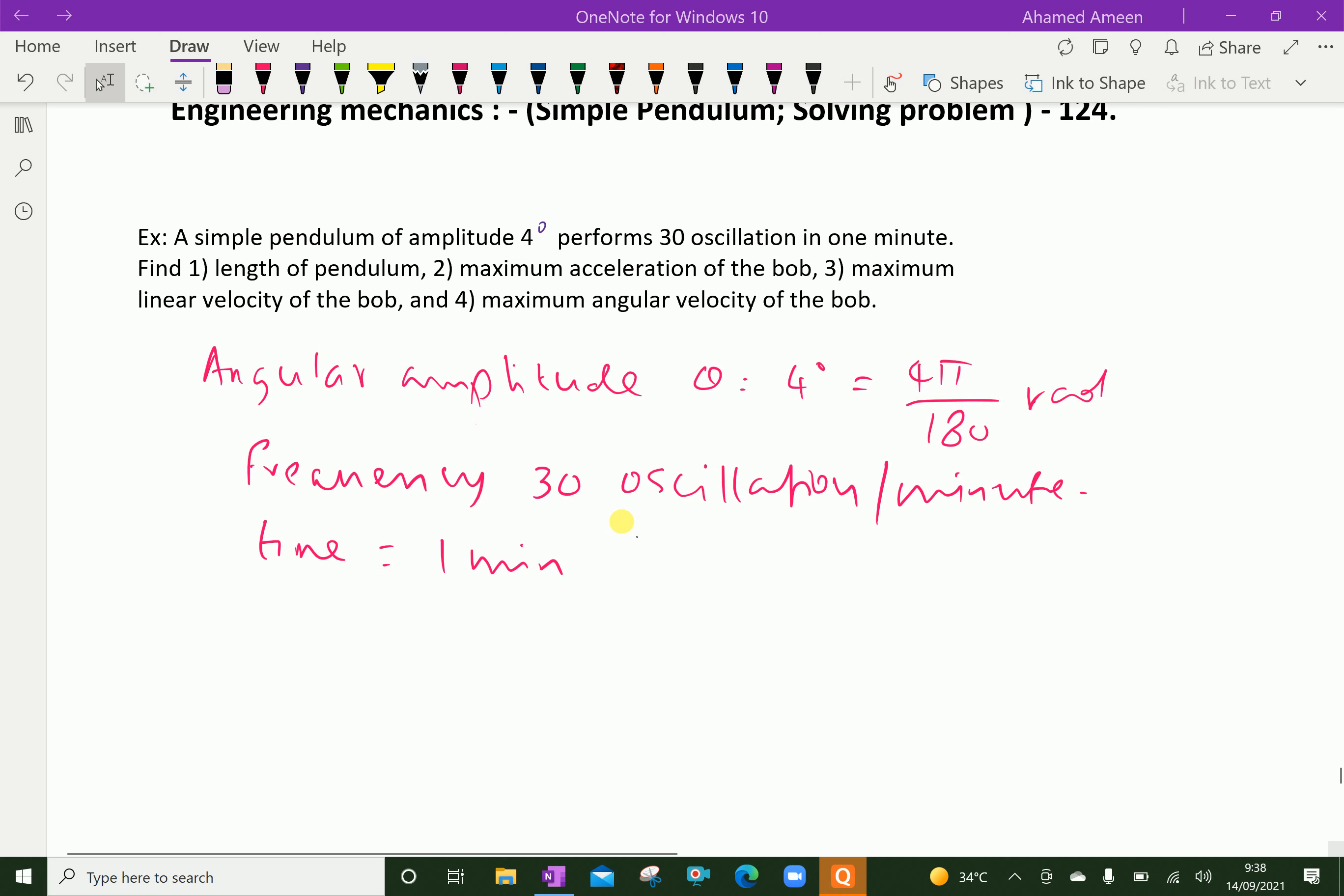Therefore, you can see, time period for 1 oscillation, time period for 1 oscillation is 60 seconds over 30 oscillations. That is 2 seconds.